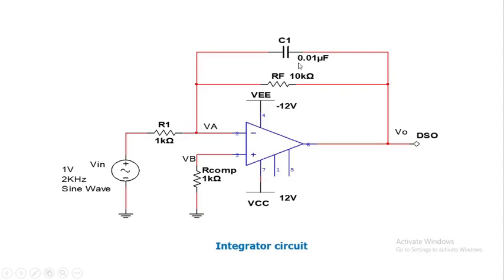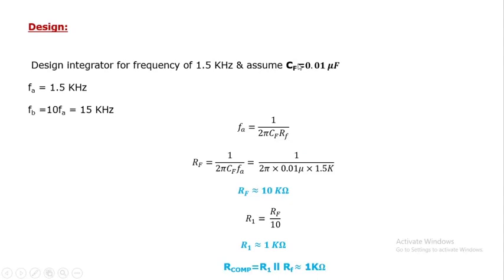To design this integrator, the design statement is: design an integrator for frequency 1.5 kilohertz, and we assume the feedback capacitor CF is equal to 0.01 microfarad. We consider fa as 1.5 kilohertz, and we assume fb is equal to 10 times fa as per design consideration, so fb is equal to 15 kilohertz.